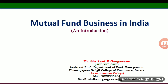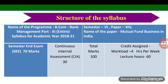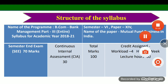Let us start with the evaluation pattern. The evaluation pattern is the same as last semester. The semester-end external exam is for 70 marks and continuous internal assessment is for 30 marks, making total marks 100. The credit assigned for this paper is four, and total hours are 60 hours. The paper number is 14 and the name of the paper is Mutual Fund Business in India.